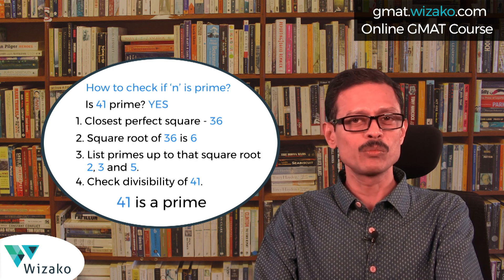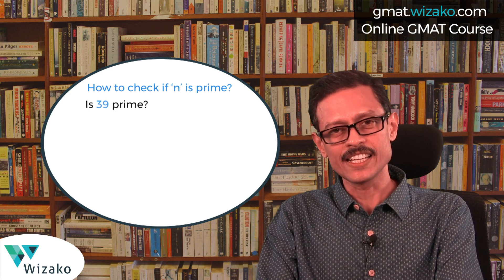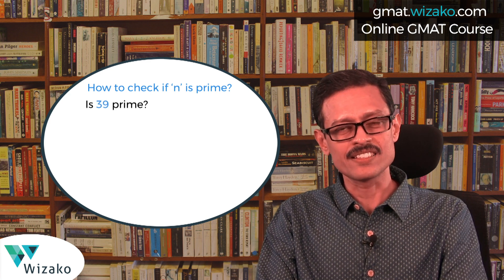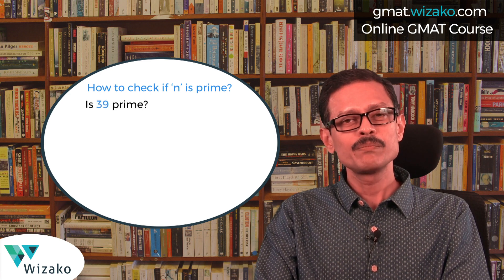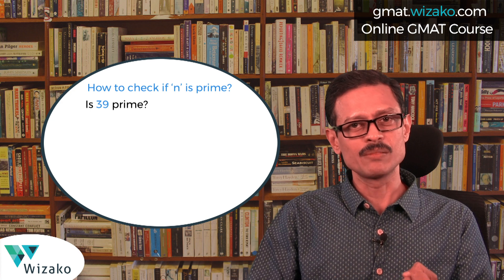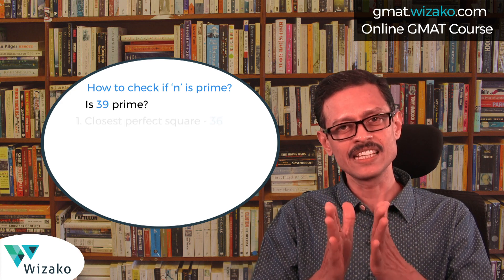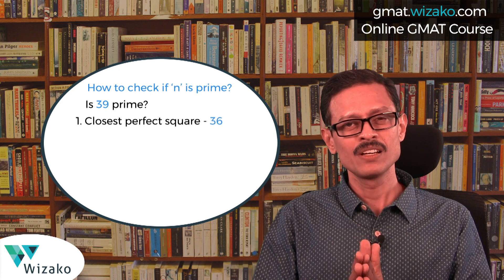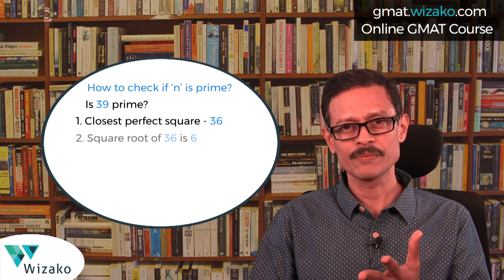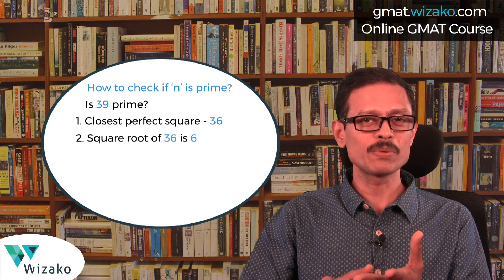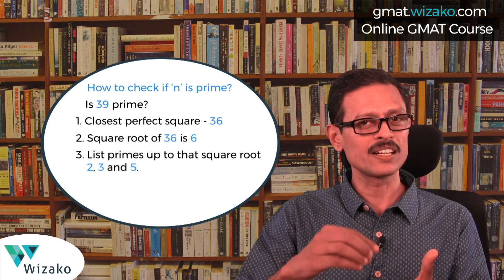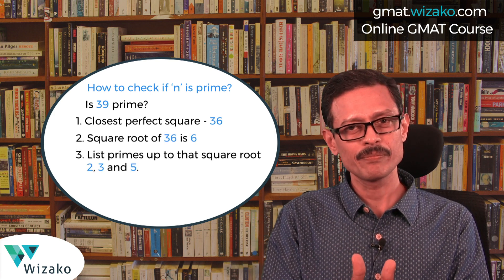Let's look at one more example: check whether 39 is prime. The steps are exactly the same. Pick the closest perfect square lesser than the number, which is again 36. So the square root of 36 is again 6. Listing down primes — step 3 is again going to be the same — the primes up to 6 are 2, 3, and 5.